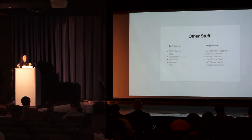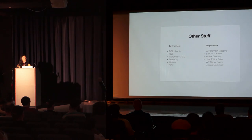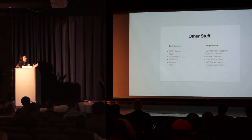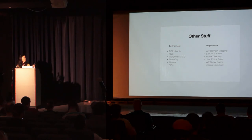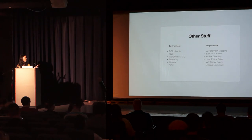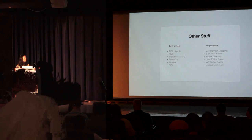Our environment was on EC2 and Ubuntu, using RDS for the database. We used WordPress version 3.3.2 with TeamCity for continuous integration, and had Memcache and APC along with WP Super Cache as a caching layer. The plugins used across all blogs were: WP Domain Mapping, S3 Cloud Server, Active Directory, User Editor Roles — which lets you change editor roles and assign different groups — WP Super Cache, and Disqus Comments. We didn't use an AddThis plugin since we only needed it for certain blogs and it was simple enough to implement manually.